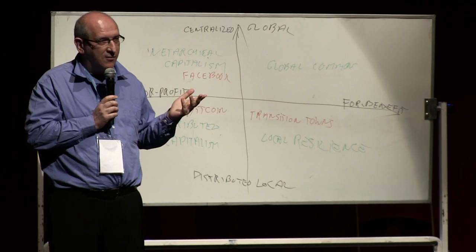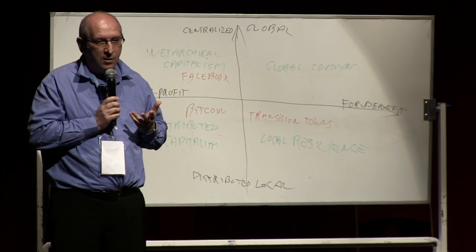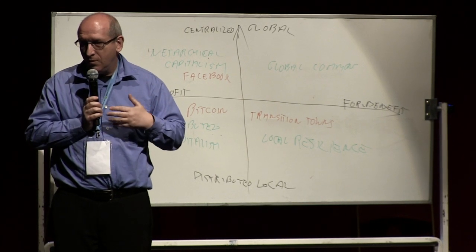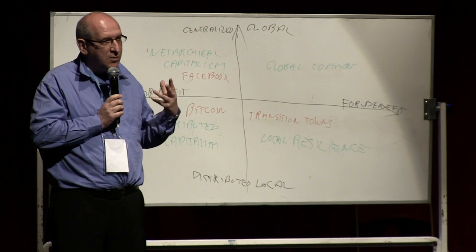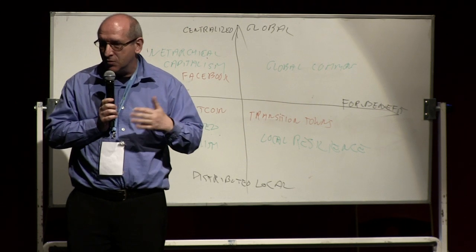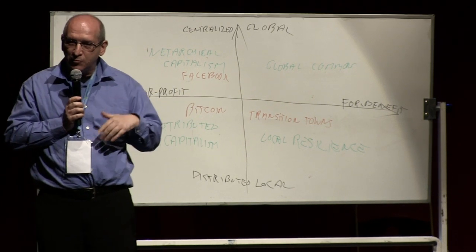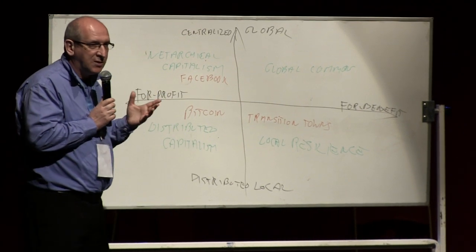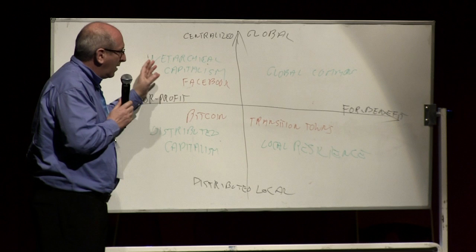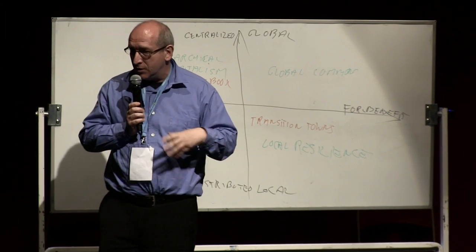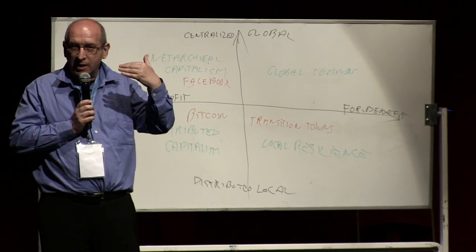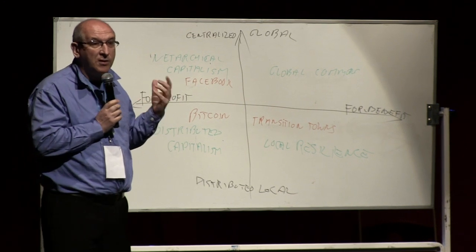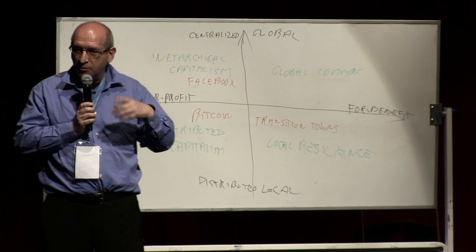But what about the back end? Who is doing the design of Facebook? What is happening with your private data? Who is prompting you to do certain things or not? Who is making privacy protection difficult and sharing easy? It's very easy to understand that even though Facebook allows you to socialize horizontally, it is actually a hierarchy behind it. This is what I call netarchical capitalism, the hierarchy of the network.